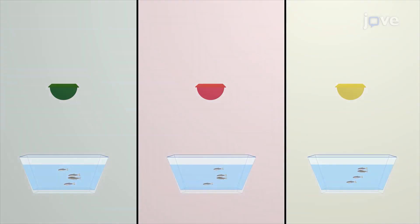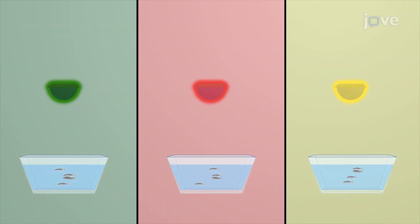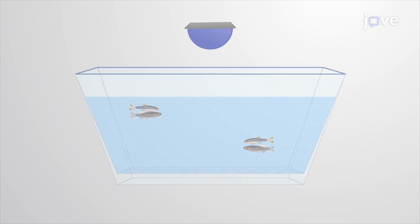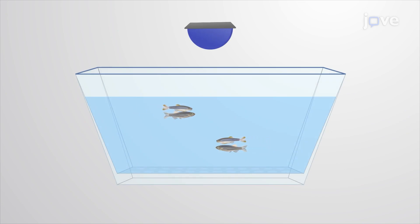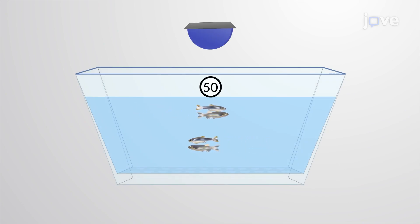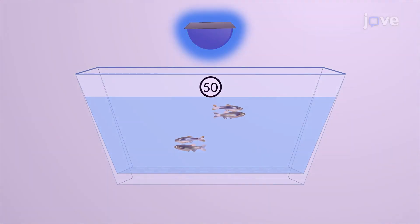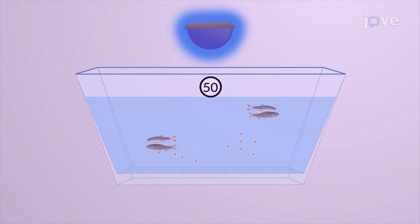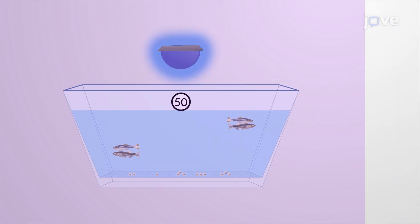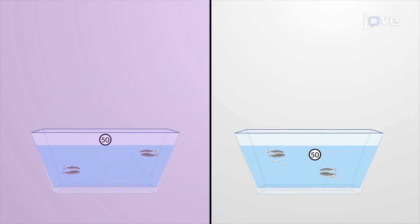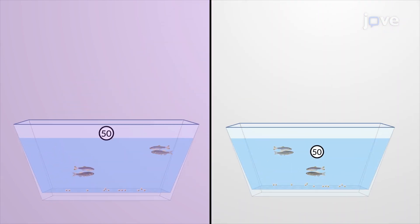Exposure to different light wavelengths may affect the spawning rate in zebrafish. So, an experiment is conducted where one group of 50 zebrafish is exposed to blue light, and their spawning rate is compared with the control group having the same sample size.